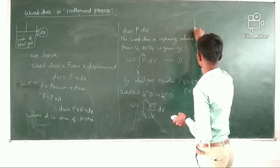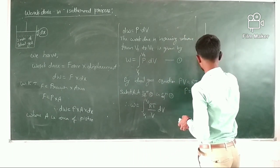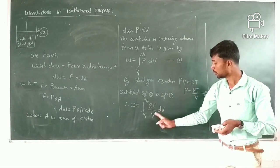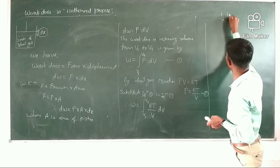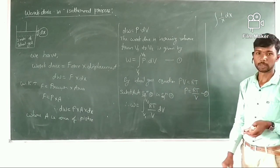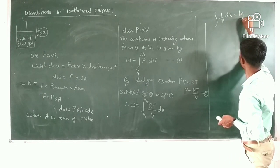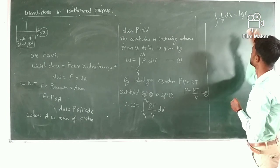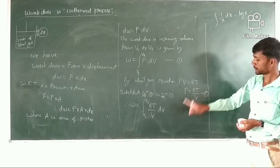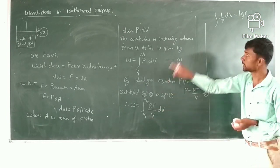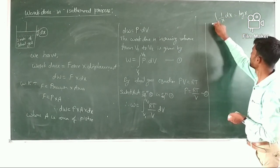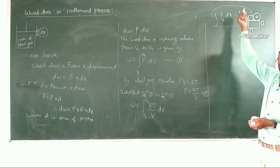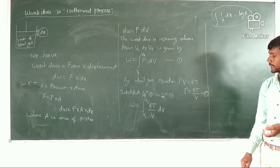Using the standard integration formula: the integral of 1/x dx equals log x. Applying this formula here, W equals RT multiplied by log V, evaluated with limits from V1 to V2. Substituting the limits gives W equals RT times [log V2 minus log V1].